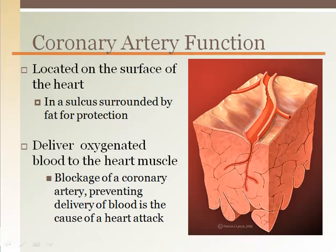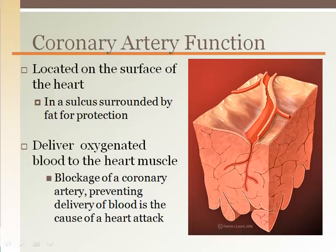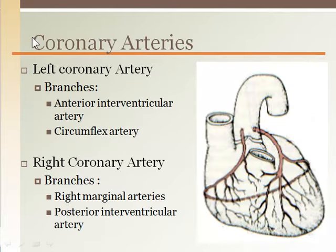Coronary arteries are vessels found on the surface of the heart that deliver blood to the heart muscle itself — it is blockage of these arteries that causes a heart attack. The coronary arteries are surrounded by a fat pad and sit in shallow grooves called a sulcus. This outer fat layer and the sulcus are features that prevent the coronary arteries from being compressed when the heart expands inside the pericardial sac while filling with blood.